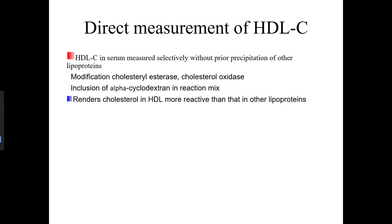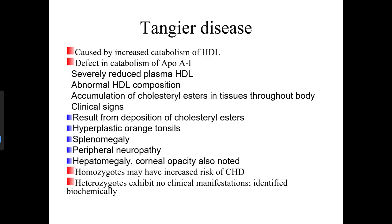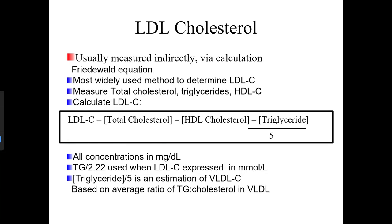Tangier disease is caused by increased catabolism of HDL, a defect in catabolism of Apo A-I, resulting in severely reduced plasma HDL and abnormal HDL composition. It results in deposition of cholesterol esters, hyperplastic orange tonsils, splenomegaly, peripheral neuropathy, hepatomegaly, and corneal opacity. Homozygotes may have increased CHD risk; heterozygotes exhibit no clinical manifestations.